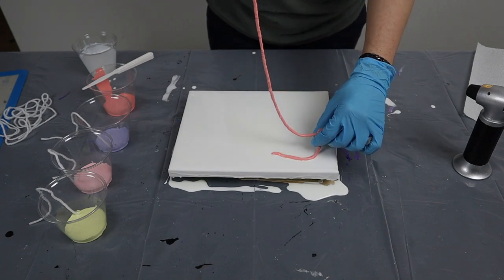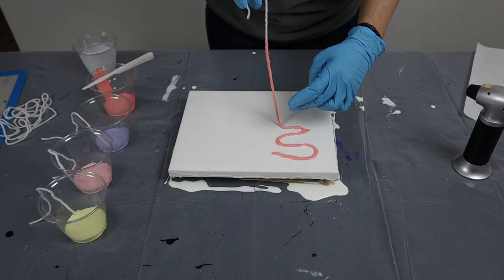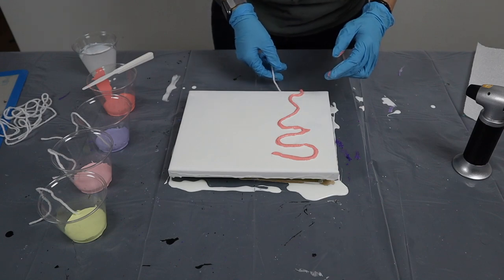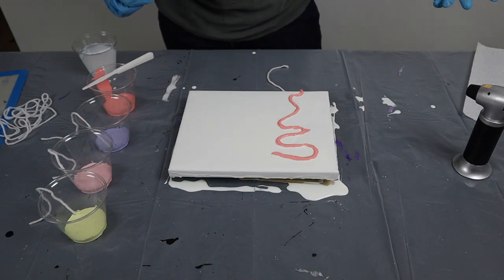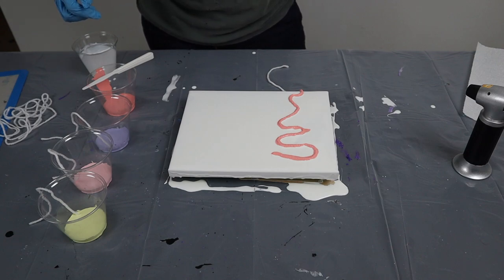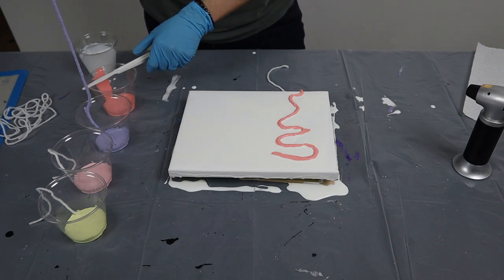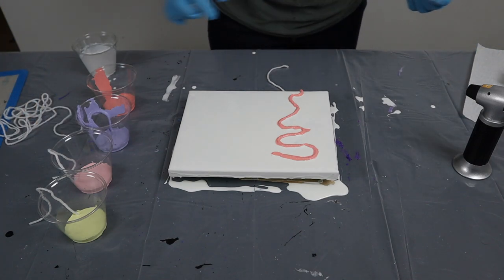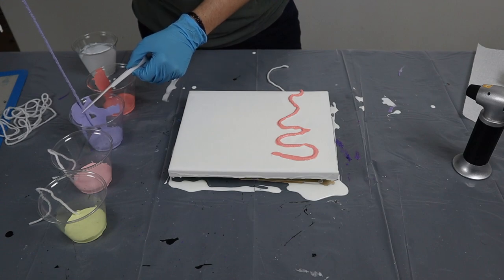So I'm just going to loop it around. Now do I want to do one string at a time or two? Not sure. I am working on an 8x10 canvas, kind of small canvas just so I can experiment and play.